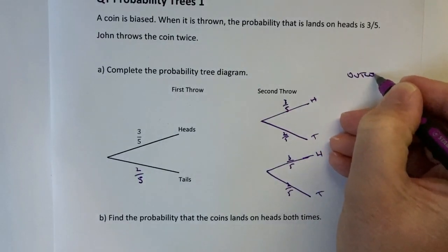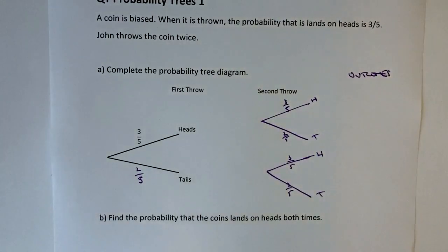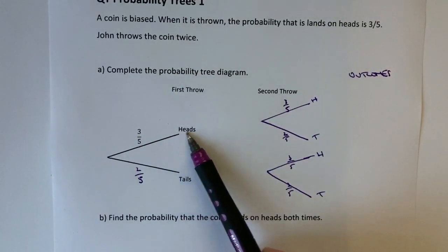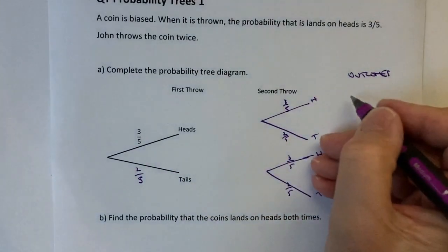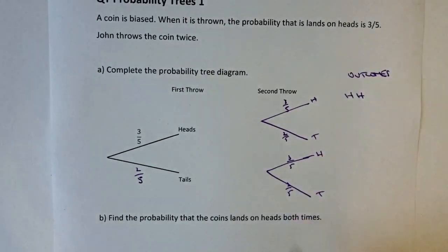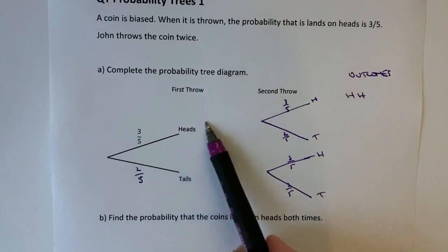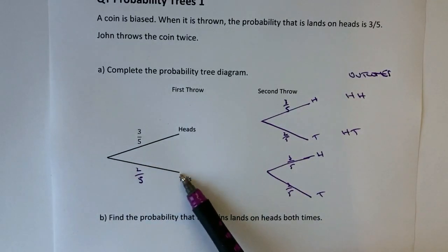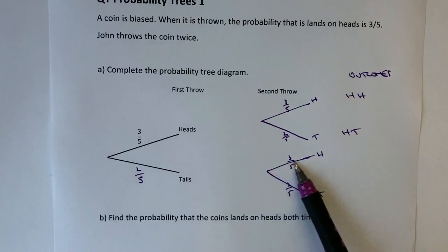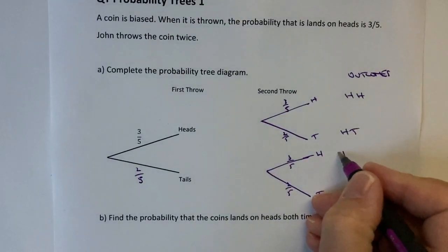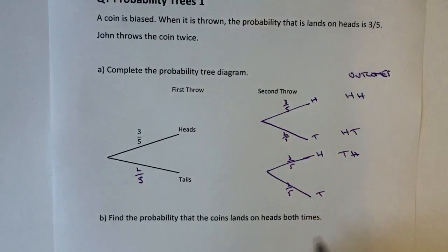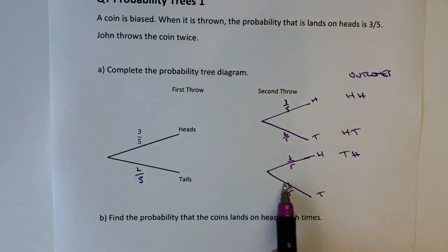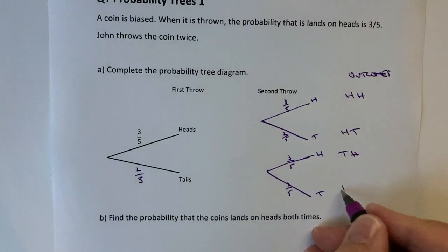Okay, so the outcomes with the first two throws could be heads and then we follow the branch across and heads again. Okay, and then the second one would be heads and then tails. So that one would be heads and tails. Okay, the third one then would be tails and then follow the branch and I've got heads. So this would be tails and heads and then finally tails and tails. So I can write that as TT.